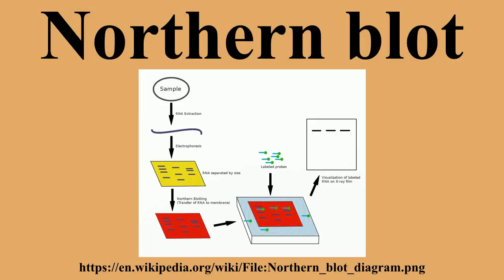With northern blotting it is possible to observe cellular control over structure and function by determining the particular gene expression rates during differentiation and morphogenesis, as well as in abnormal or diseased conditions. Northern blotting involves the use of electrophoresis to separate RNA samples by size, and detection with a hybridization probe complementary to part of or the entire target sequence.